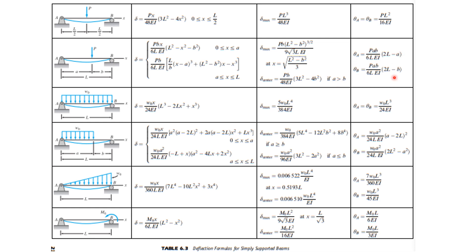For the uniformly distributed load on a simply supported beam, you need to be familiar with delta max at mid-span: 5W₀L⁴ over 384EI, and theta equals theta B equals W₀L³ over 24EI. For the triangular loading general expressions, what is important is at the center: W₀L⁴ over 384EI — but you can always refer to this table whenever applicable in a particular problem.